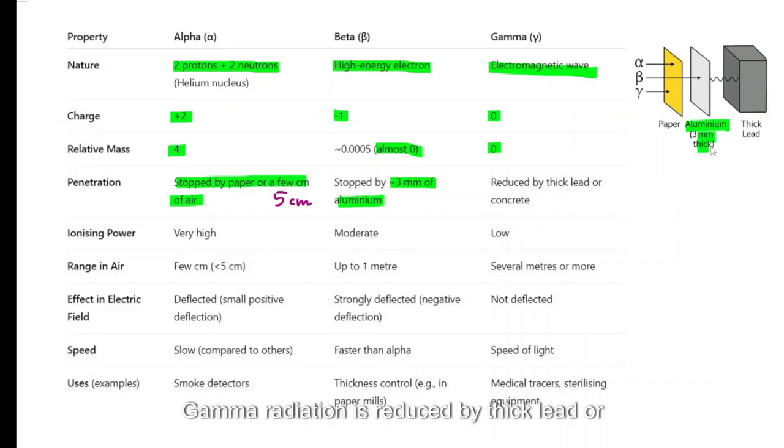Gamma radiation is reduced by thick lead or concrete. Ionizing power, alpha is highly ionizing, beta is moderately ionizing, gamma, least ionizing of the three.